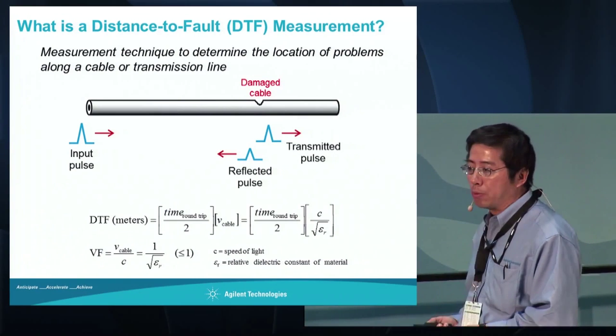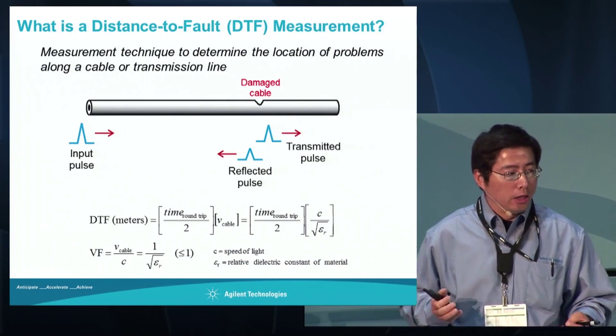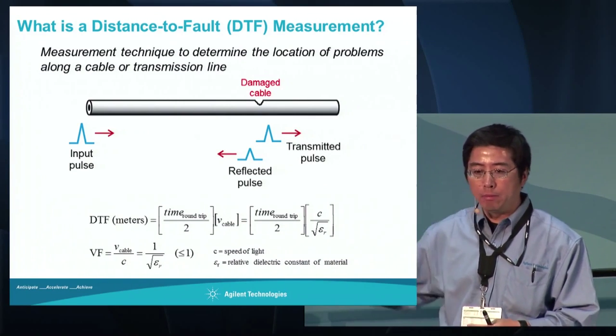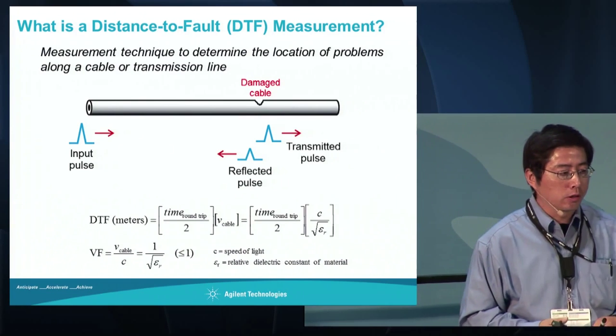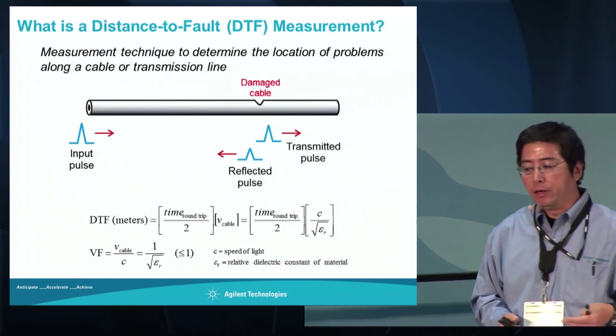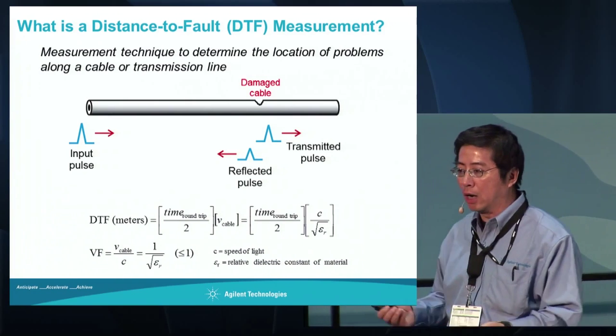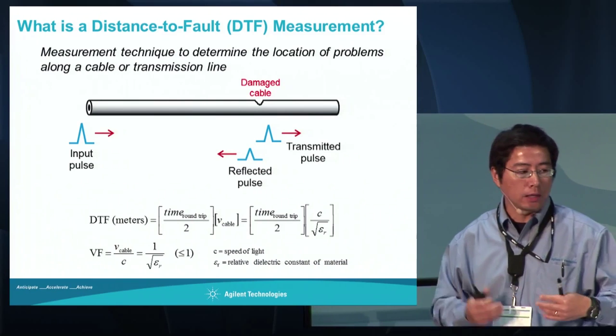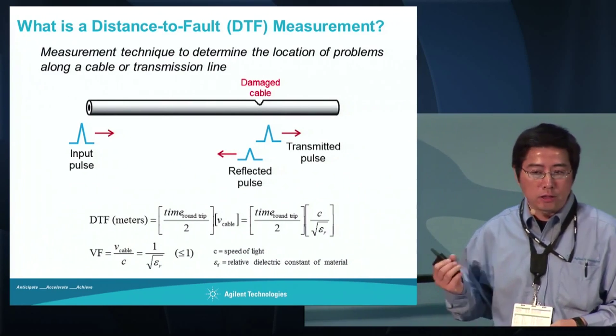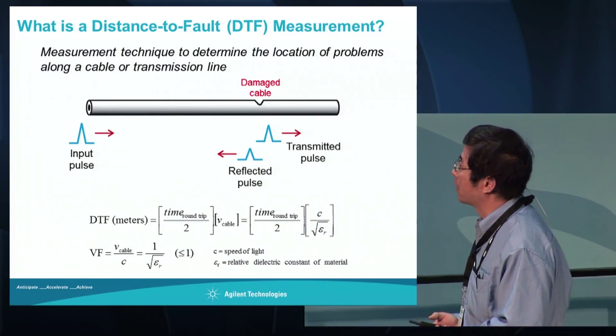We've talked about the frequency domain - return loss and VSWR. Now let's talk about time domain. In the cable antenna industry, we typically talk about distance to fault, which is half of the time domain. In the early days, you had a cable and an antenna, and you could easily figure out which component was the problem. But now you have a diplexer, duplexer, and tower-mounted amplifiers - many components in the system. Distance to fault becomes the only way to identify where the problem is.